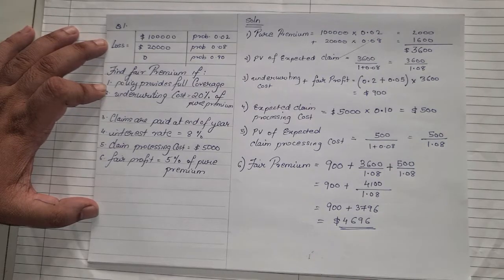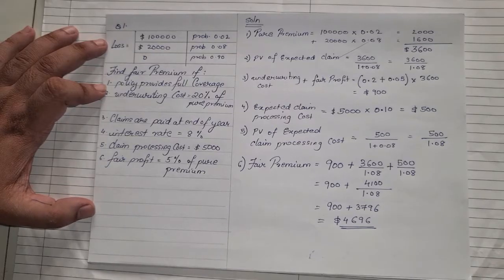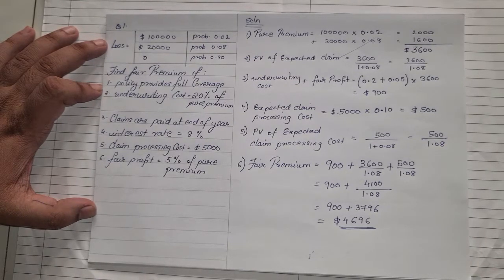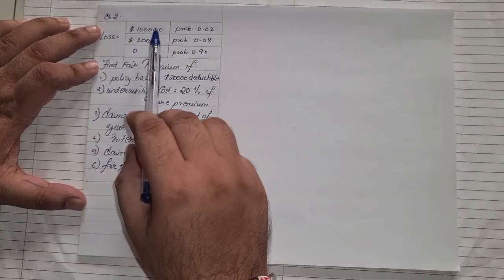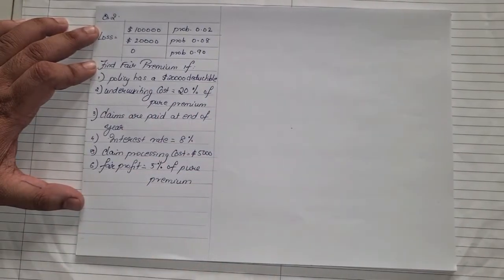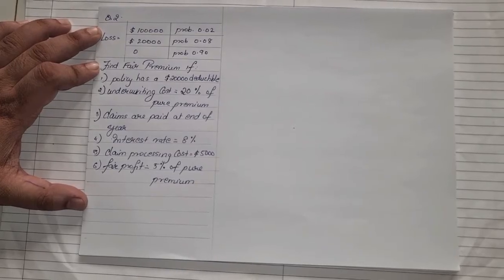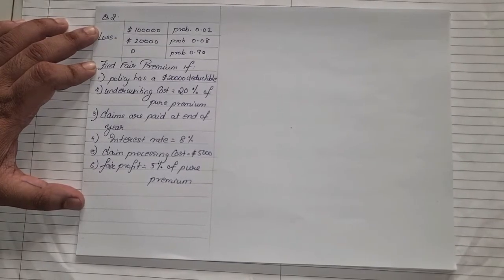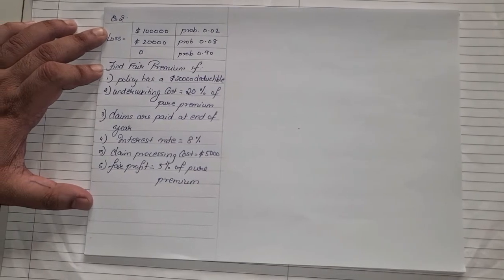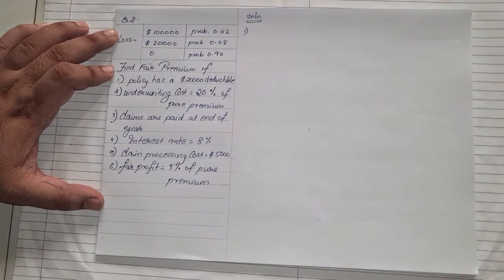So the total fair premium is $4,696. That is how we solve the sum for fair premium when full coverage is given. Now we'll do a sum where there are deductions. The second question again gives losses with values and probabilities, and asks to find the fair premium if the policy has a $20,000 deductible. Underwriting cost, interest rate, claim processing cost, and fair profit values are all given.